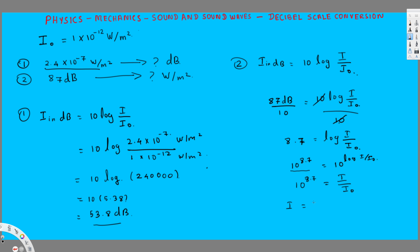So I equals 10^8.7 times I₀. Converting 10^8.7 into scientific notation gives us 5.01×10⁸. Multiplying by I₀ = 1×10⁻¹² Watt per meter square, we get I = 5.01×10⁻⁴ Watt per meter square. This value corresponds to 87 decibel. That's how we convert decibel to Watt per meter square - I hope you guys liked this video, see you next time.